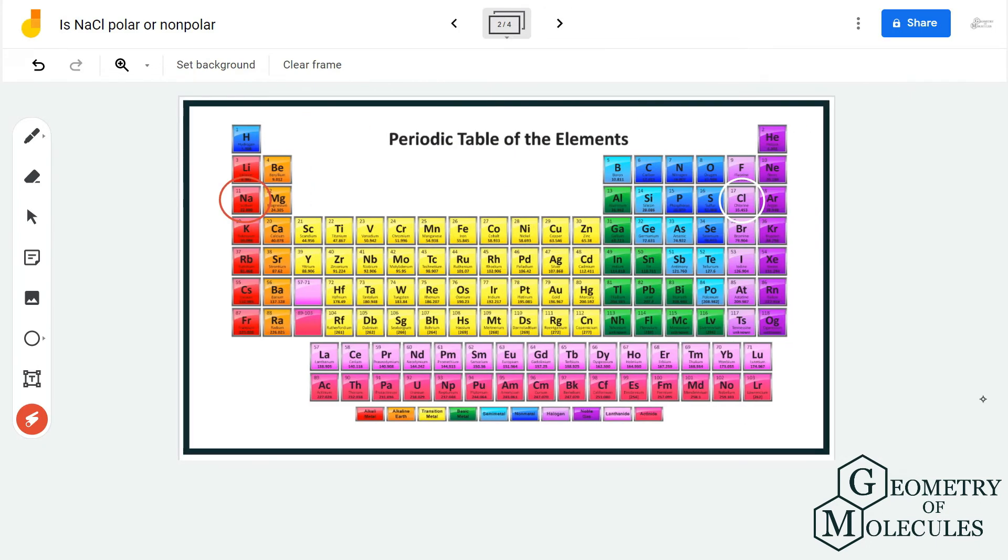You can also use the periodic table to understand what kind of molecule it is. If you look at the periodic table, the difference of electronegativities of sodium and chlorine is higher than 2.0, and compounds that exhibit this kind of property are known as ionic compounds.